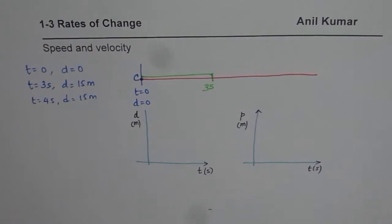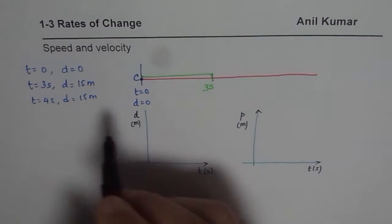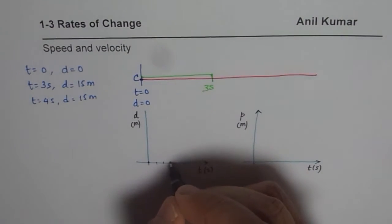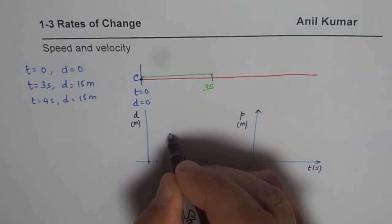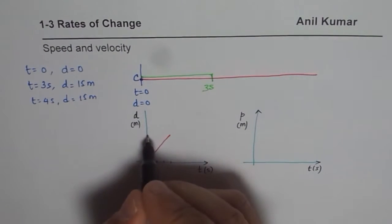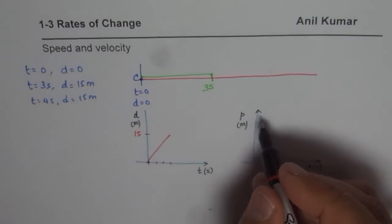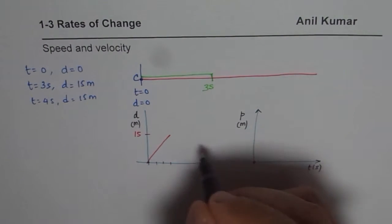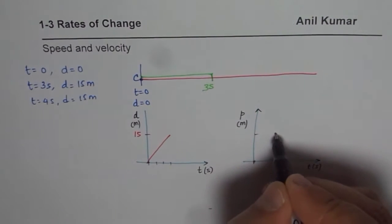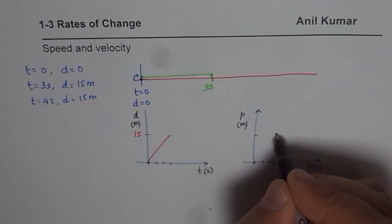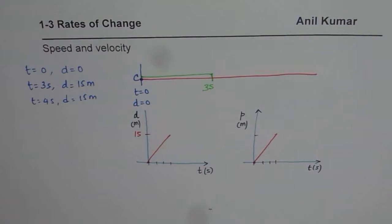To start with, the object is at rest, and in 1, 2, 3 seconds the object moves to a distance of 15 meters. So we write 15 here — that is the first leg. As far as position is concerned, the position is also the same — it is 15 in 3 seconds. So the graph is exactly the same at this moment.